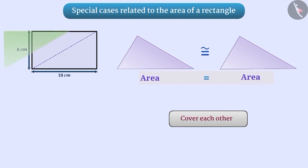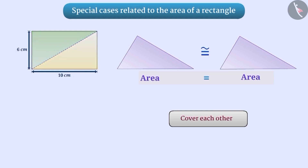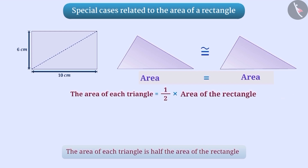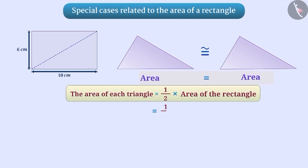Since the rectangle is being divided into two equal parts, we can say that the area of each triangle is half the area of the rectangle. The sum of the areas of the two triangles is the same as the area of the rectangle. The area of each triangle here will be half into length of the rectangle into breadth of the rectangle.